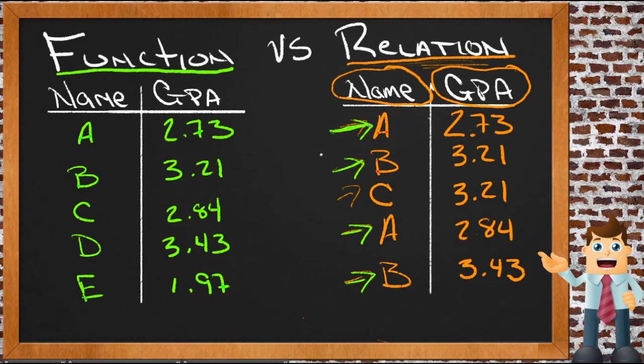One time we'll get this answer and one time we'll get this answer. So a relation is just sort of a comparison of information.